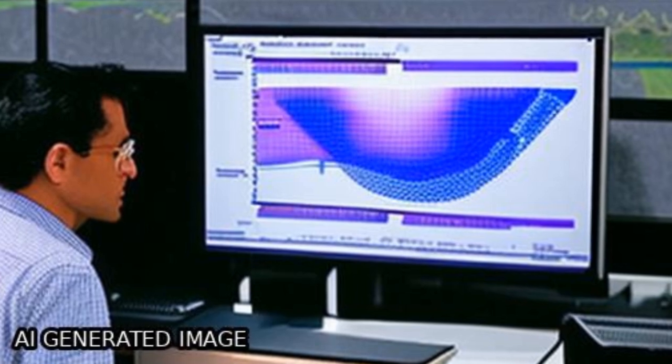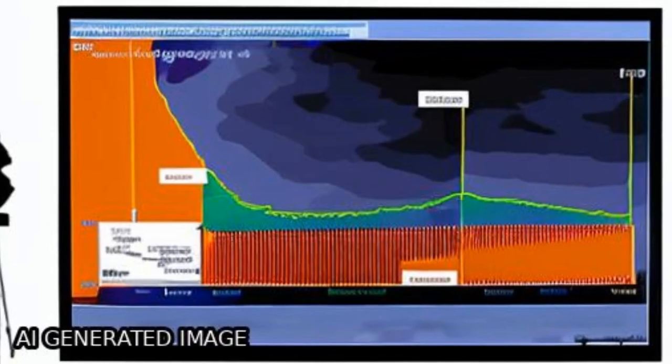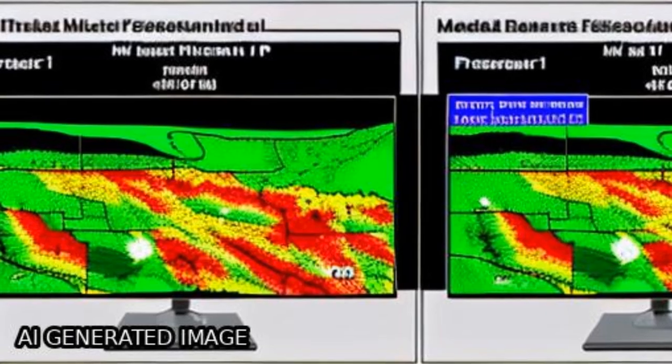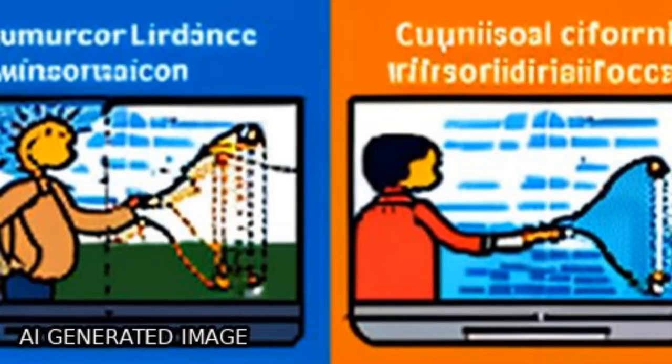Three cloud microphysical schemes are examined, with Morrison being chosen for assessing land surface precipitation feedback analysis due to better forecast skills.